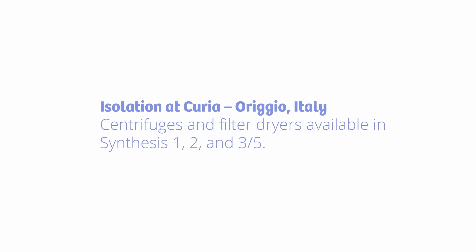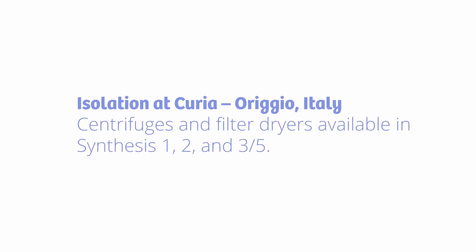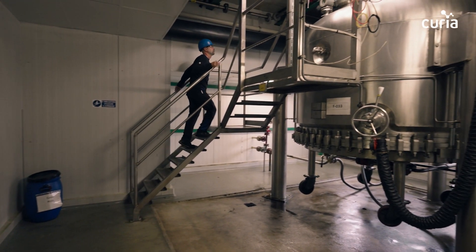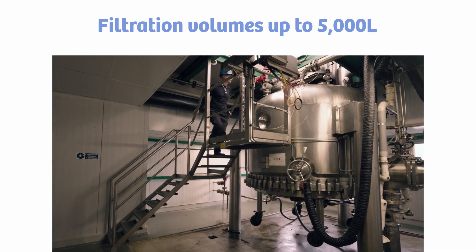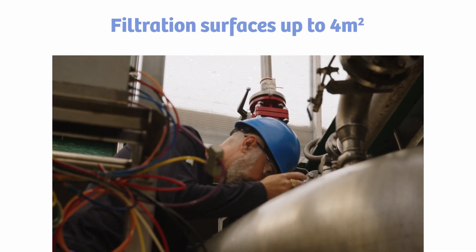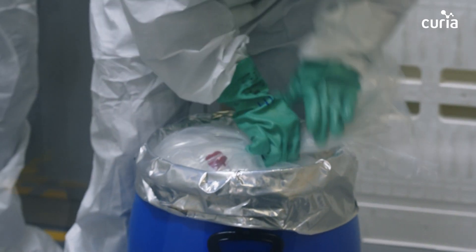After synthesis is complete, materials are isolated via centrifugal or pressure filtration. Each method is available in each synthesis building. Filtration vessels are available with volumes as large as 5,000 liters and filtration surfaces as large as 4 square meters.